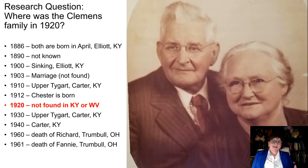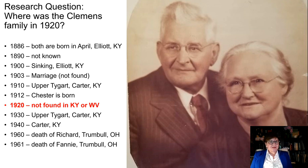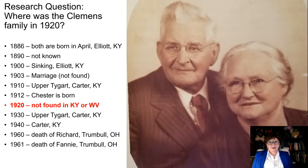Something to point out: in 1900 they're living in a place called Sinking. But sometimes you have to talk the talk of how they would have pronounced it locally. If I went to Kentucky and said 'can you tell me where Sinking is,' they'd look at me and say y'all ain't from around here. It would be 'Sankin.' They lived over on Sankin. In 1903 they stated that they got married, but I have never been able to find a document for their marriage — I'm not done, I just haven't found one yet. In 1910 they're living in Upper Tigert in Carter County, which is next door to Elliott County.